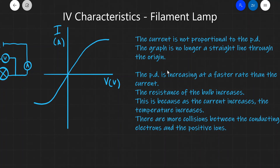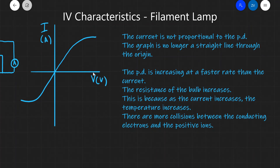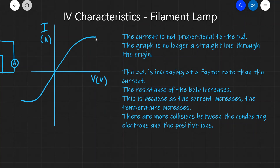Additionally, the potential difference is increasing at a faster rate than the current. If the potential difference increases by one square, the current has only moved a little bit upwards, so the PD is essentially increasing much faster. Because R equals V over I, this means that the resistance of the bulb increases, which is really important.